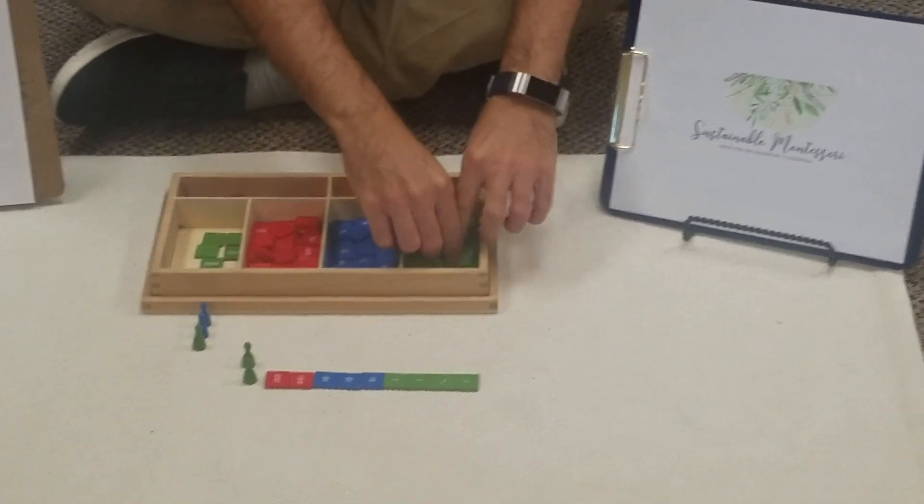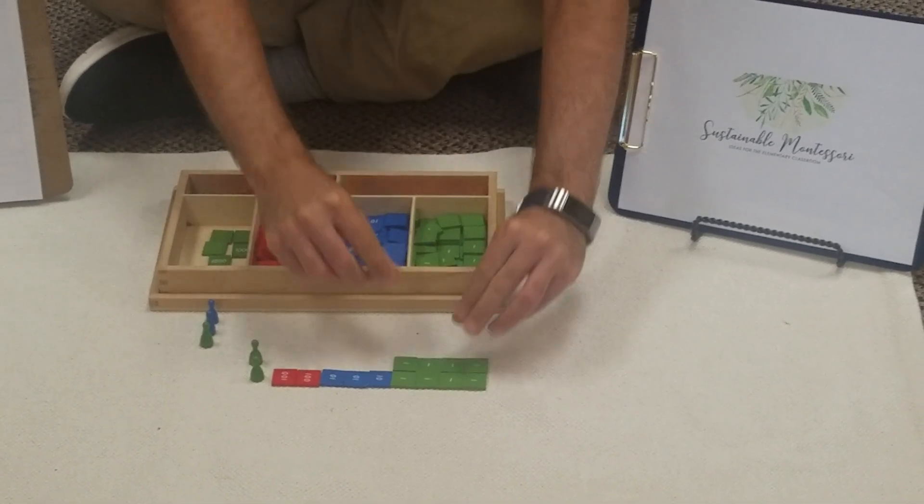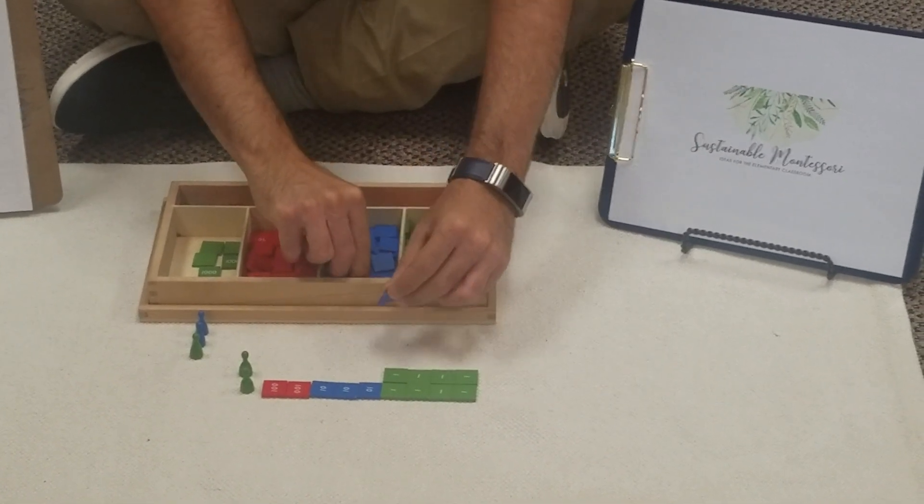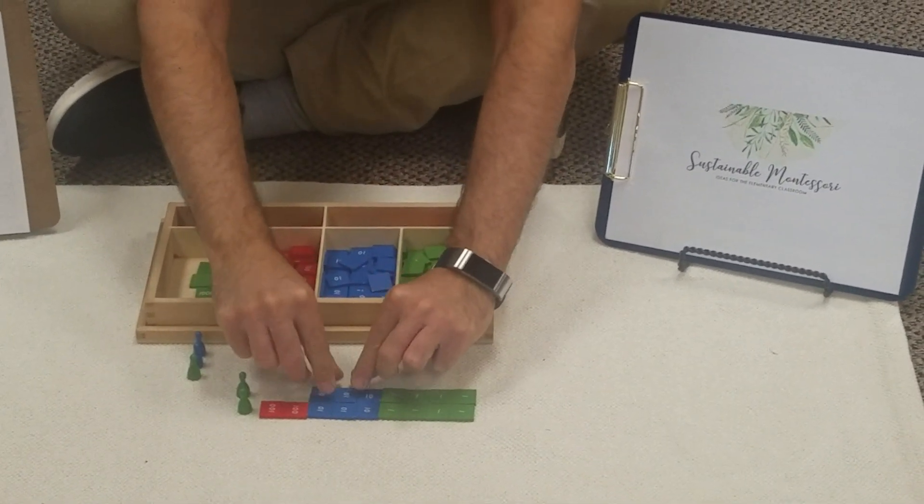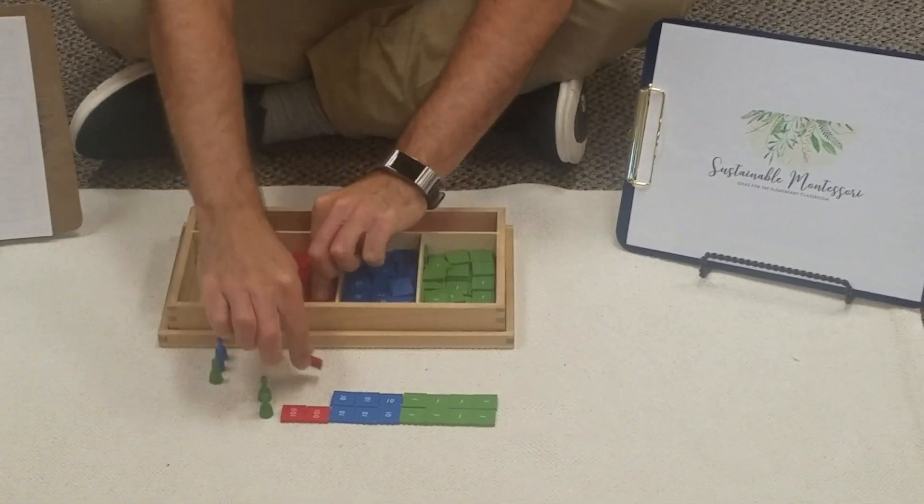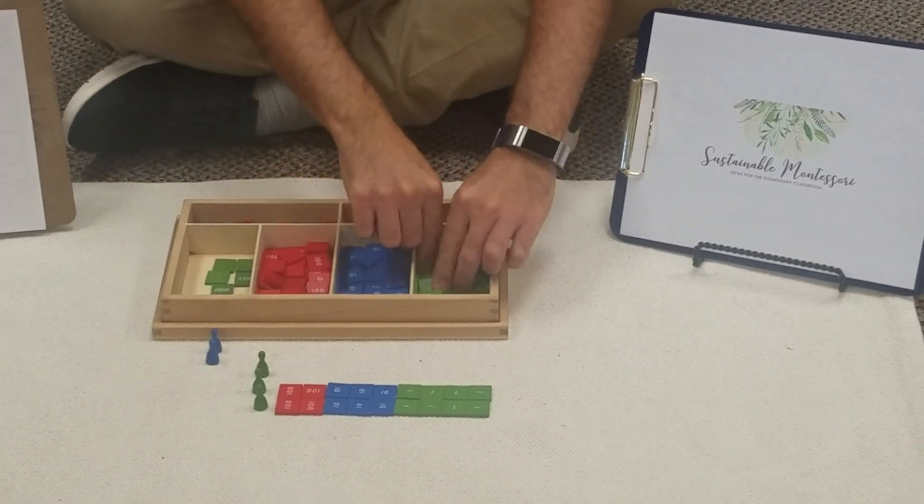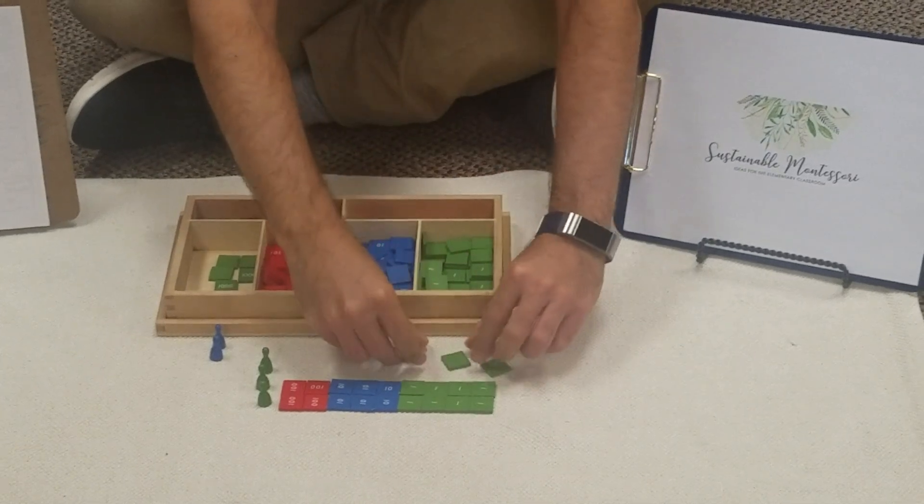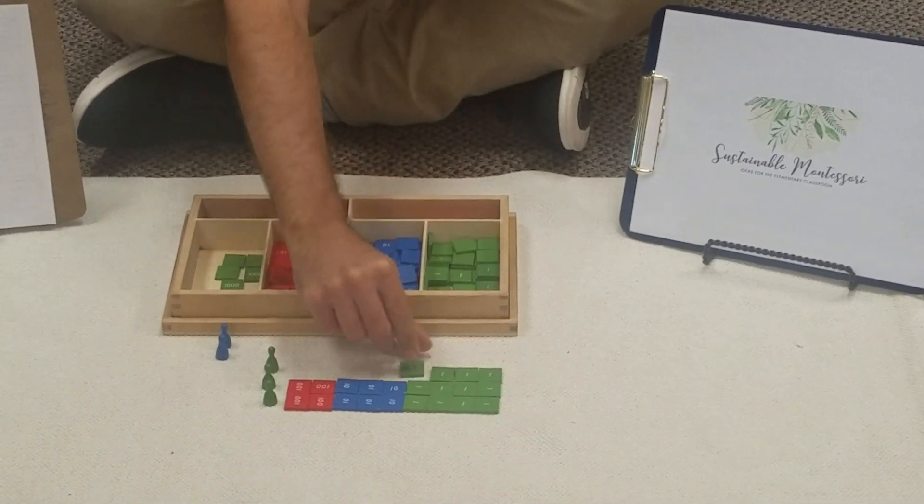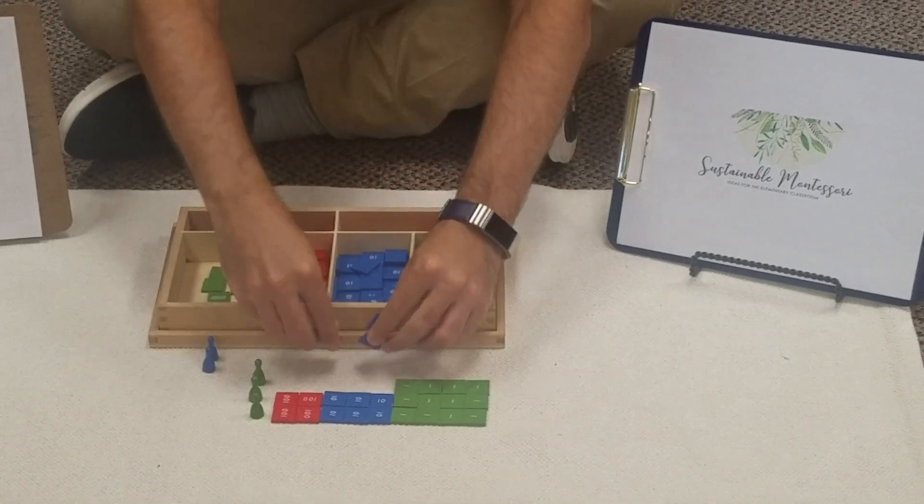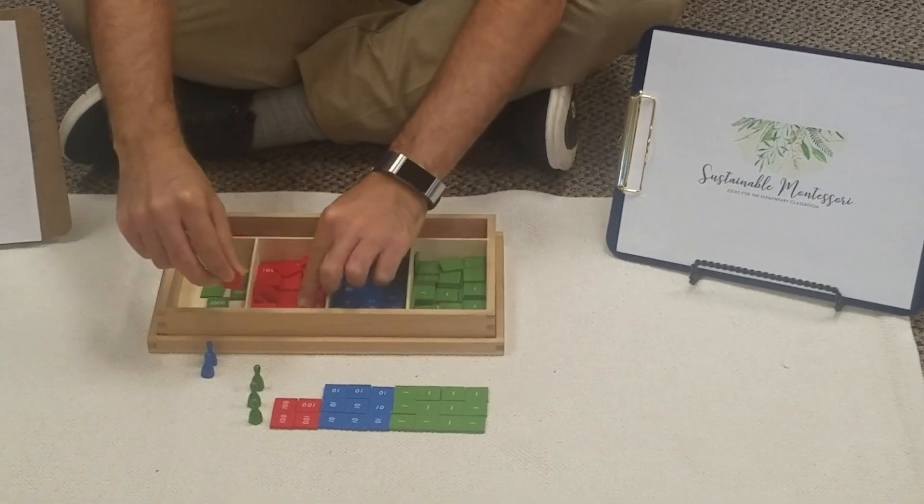So I'm going to put now again my 4 units, 3 tens, and 2 hundreds. And now the next one: four units, three tens and two hundreds.